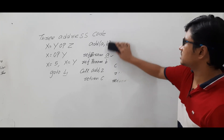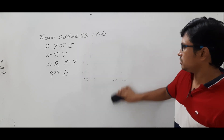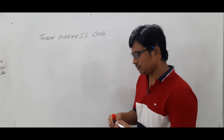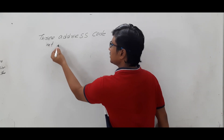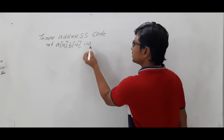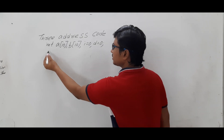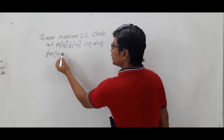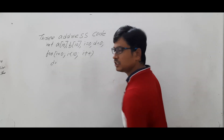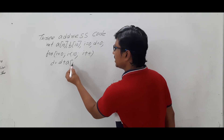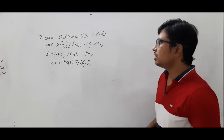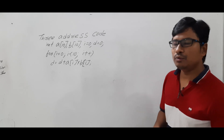Now I want to discuss one more example for better understanding. Let me take a high level language program and convert it into three address code. I have two integer arrays: int a[10], b[10], and variables i = 0, d = 0. Then a for loop: for(i = 0; i < 10; i++), executing the statement: d = d + a[i] * b[i]. Now I will convert this high level code into three address code.